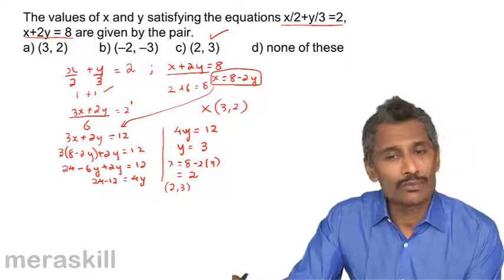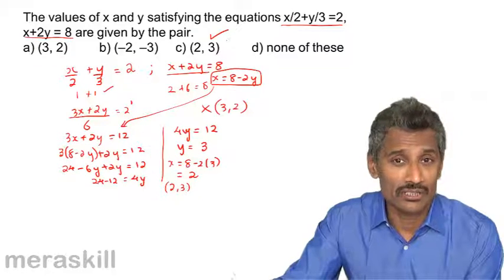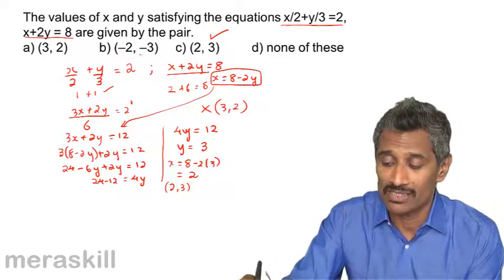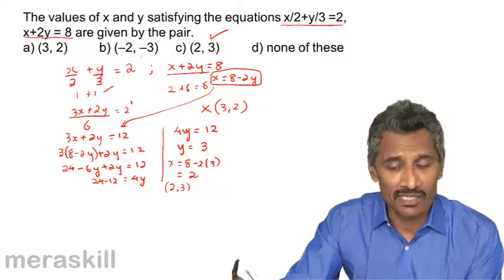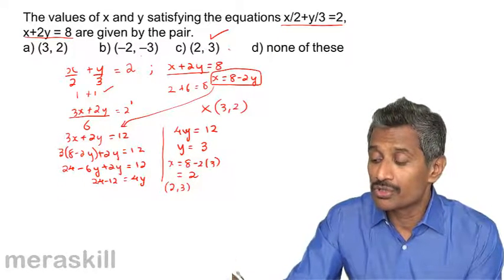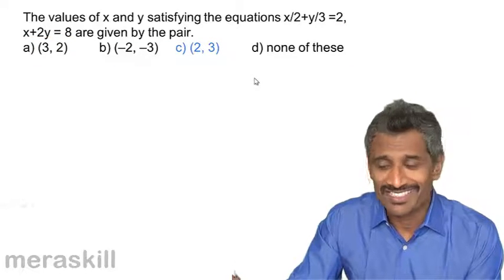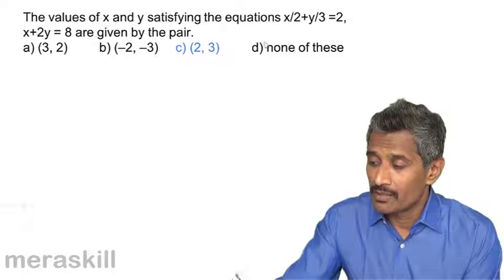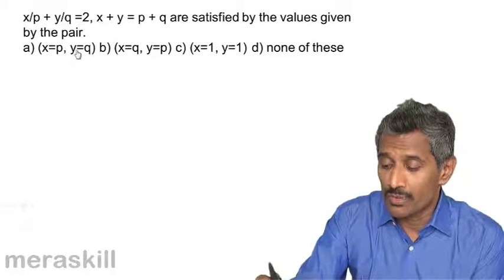It can also be smart to substitute values using judgment and check whether they are valid — for instance, we saw that a negative answer would not be possible here. Our solution is 2 comma 3.